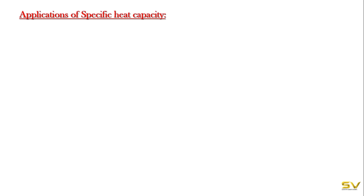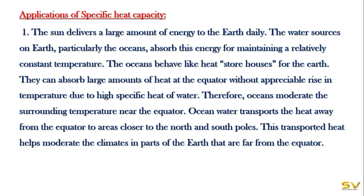Applications of specific heat capacity: The sun delivers a large amount of energy to the Earth, making it the major source of energy for us. Water sources on Earth, particularly the oceans, absorb this energy to maintain a relatively constant temperature — that is why oceans behave like heat storehouses. They can absorb large amounts of heat at the equator without an appreciable rise in temperature, due to the high specific heat of water. Ocean water also transports heat away from the equator to areas closer to the north and south poles.